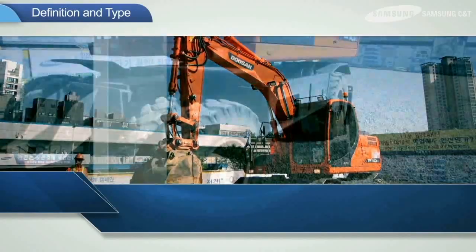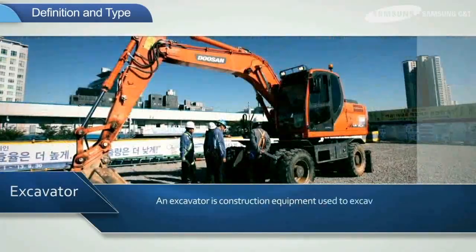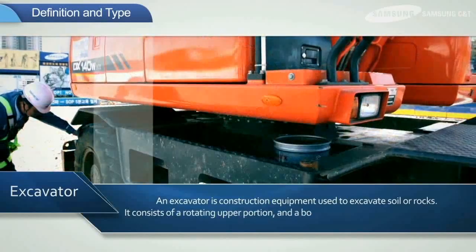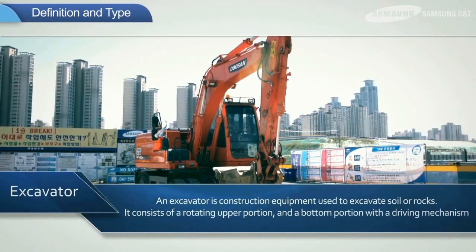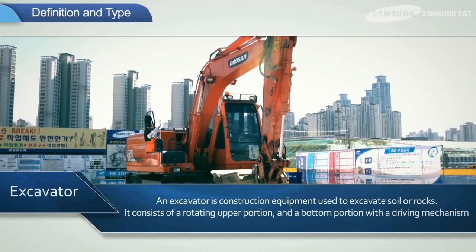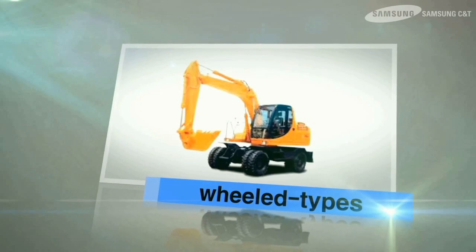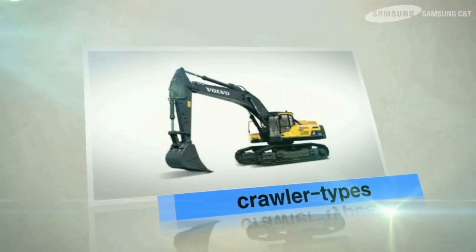First, let's look at the definition of an excavator and excavator types. An excavator is construction equipment used to excavate soil or rocks. It consists of a rotating upper platform and a bottom portion with a driving mechanism. Excavators are categorized into wheel types or crawler types.